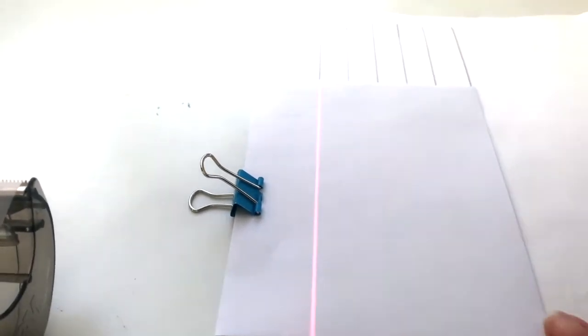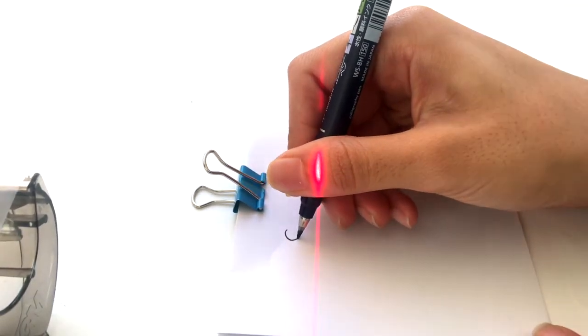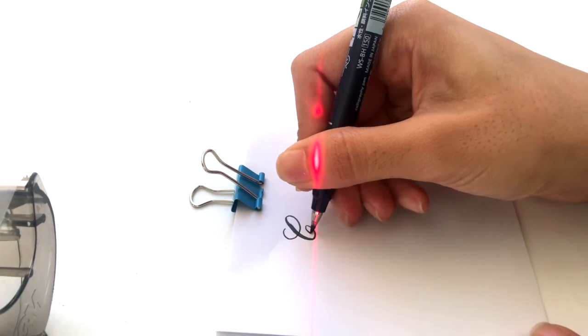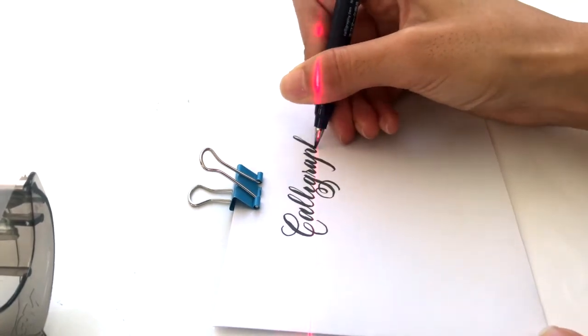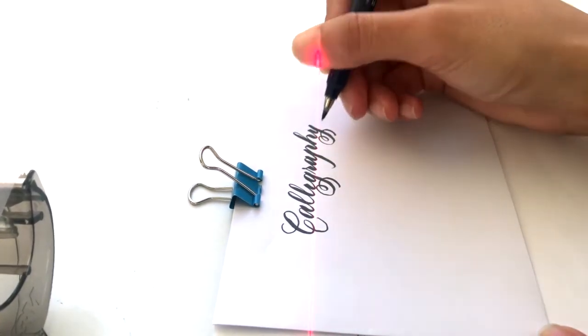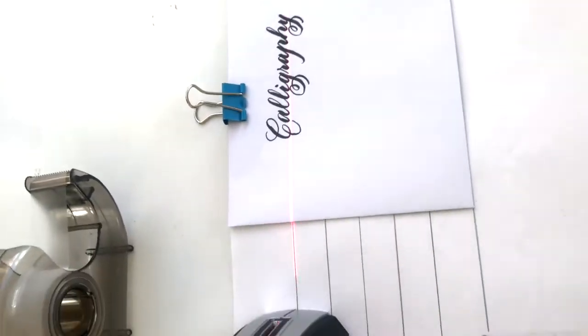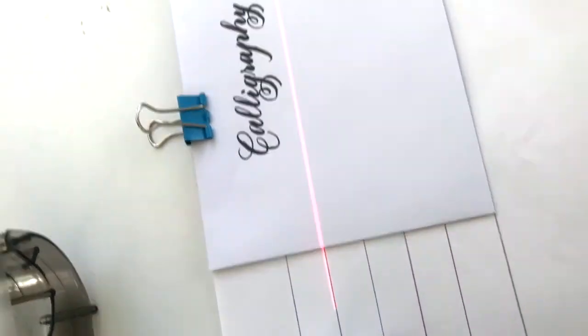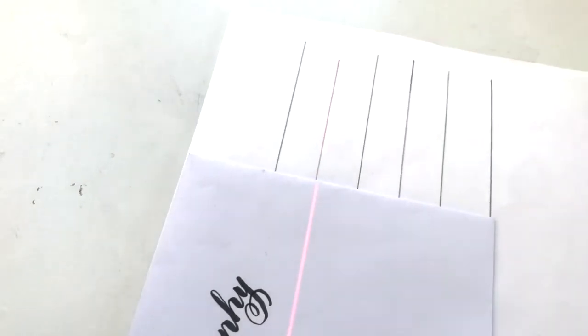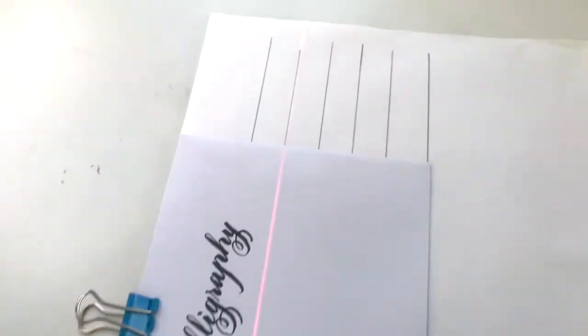Let's start writing now. So once you're done with the first line, simply take your laser liner and move it down to your second guideline, making sure that again your laser line overlaps the guidelines on both sides.